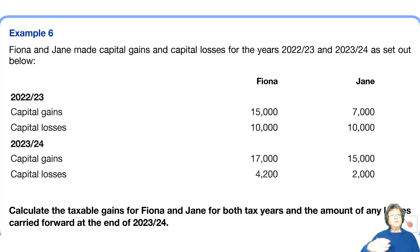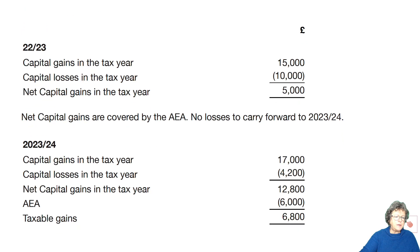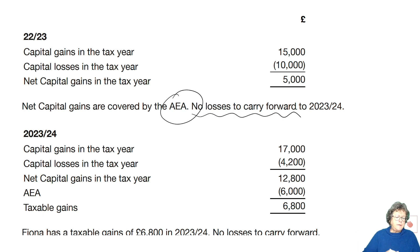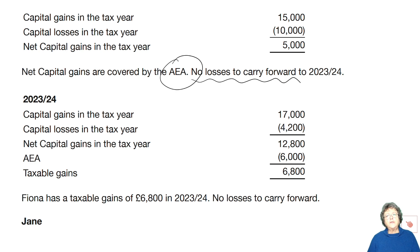I'm going to show you the model answer so you can see how the answers need to be set up. Looking at Fiona first: in 2022-23 she had a gain of 15,000 and losses of 10,000, giving net gains of 5,000, which are covered by her AEA, so there are no losses to carry forward. In 2023-24 she had gains of 17,000, losses of 4,200, and an AEA of 6,000, giving her taxable gains. The losses are dealt with by netting them off — if you do the computation with all gains and losses together, that happens naturally.